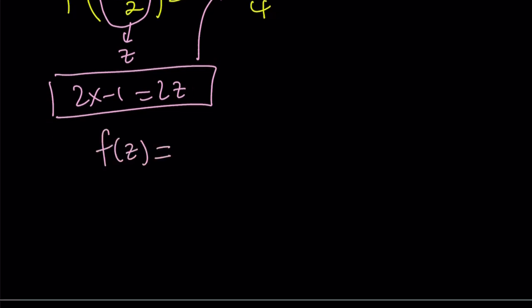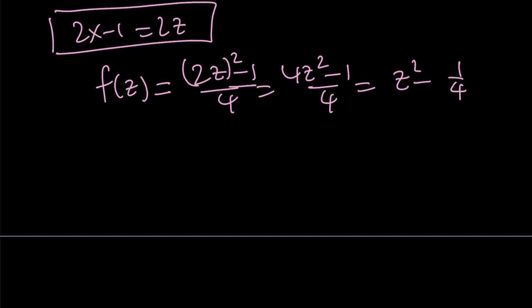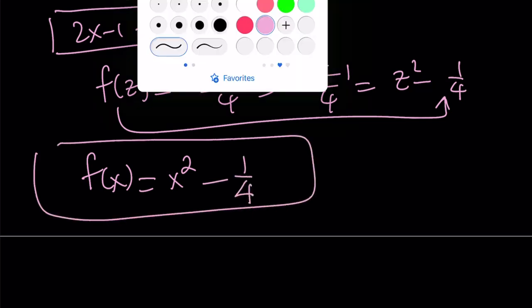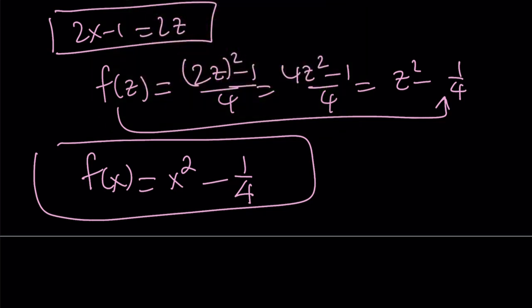Getting f of z equals 2z quantity squared minus 1 over 4. And that is 4z squared minus 1 over 4. And that can be written as z squared minus 1 fourth. This is f of z. I want to write it as f of x. And that becomes x squared minus 1 fourth. This brings us to the end of the second method and to beginning of the third method.